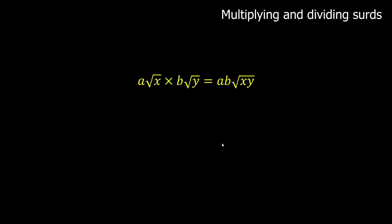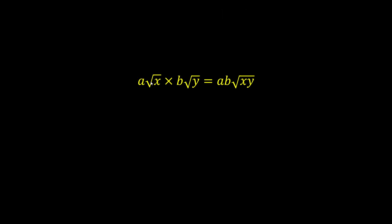Multiplying and dividing surds. The rule for multiplication is: a coefficient times a surd, times another coefficient times another surd, equals the product of the coefficients times the surd of the product of the numbers underneath. For division, a surd divided by another surd lets you separate the coefficients and put a single square root sign over the quotient of the numbers inside.